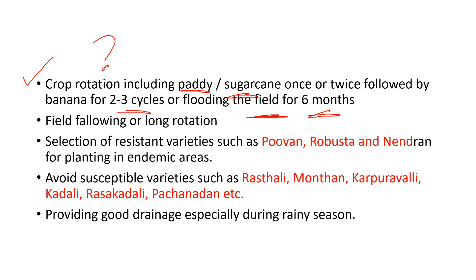The second method is long rotation technique, where you plant other trees or crops instead of continuously growing banana. This allows the soil to recover and clear itself of Fusarium oxysporum species. In endemic areas where you suspect Panama disease is spreading, you should identify and choose highly resistant varieties such as Poovan, Robusta, and Nendran, which have proven high resistance against this fungus.